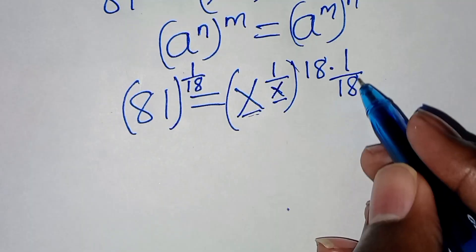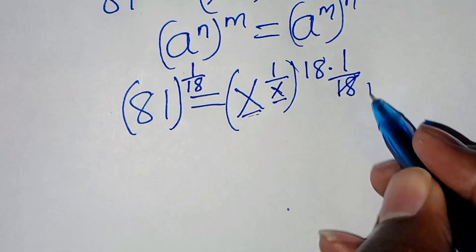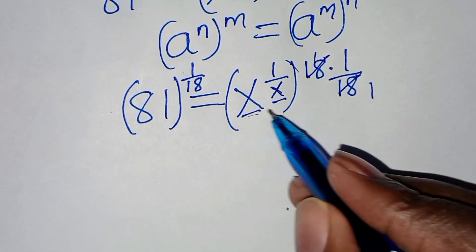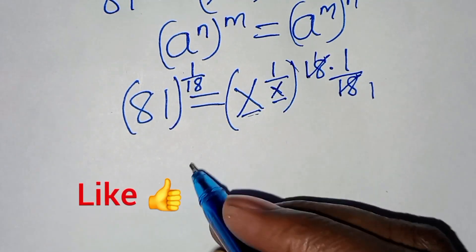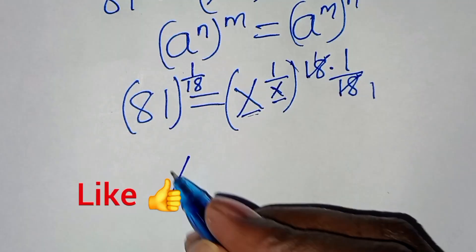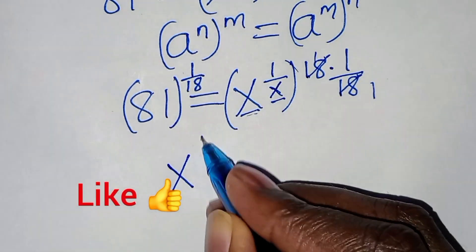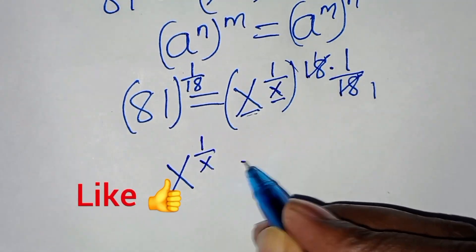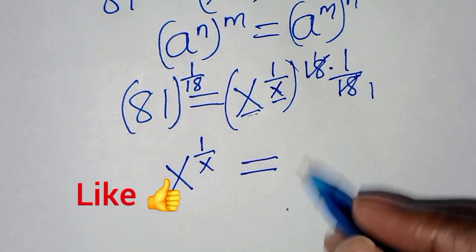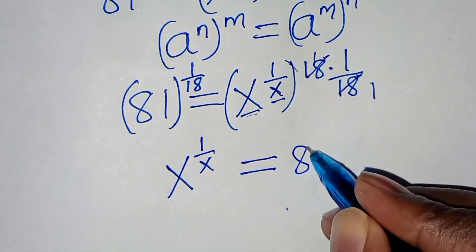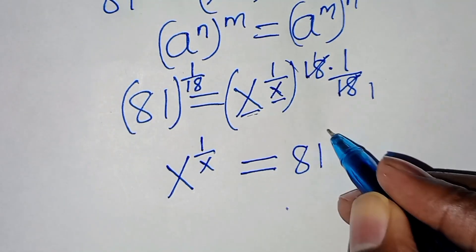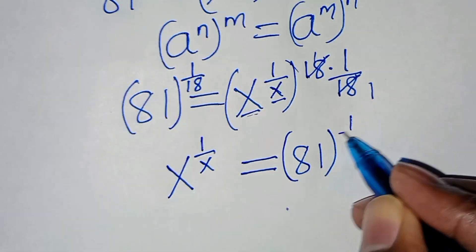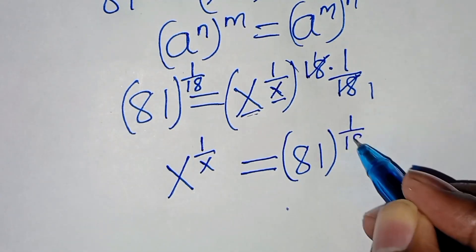Let's simplify here: 18 and 1 over 18 cancel. So this is the same thing as x to the power 1 over x, and this is equal to 81 raised to the power 1 over 18.